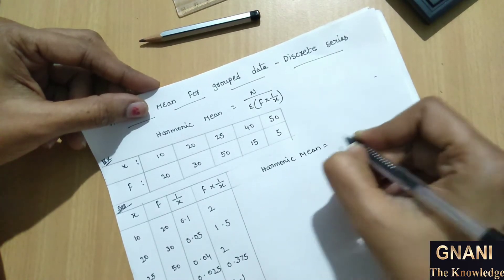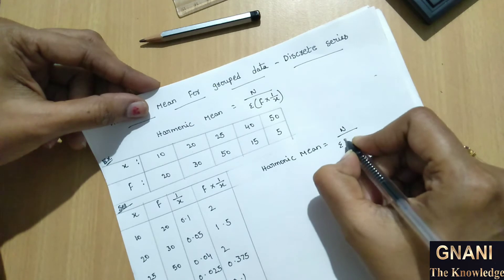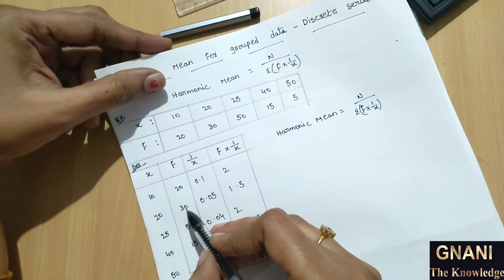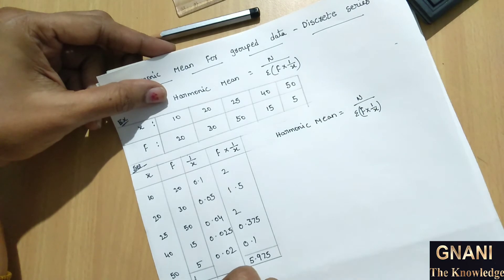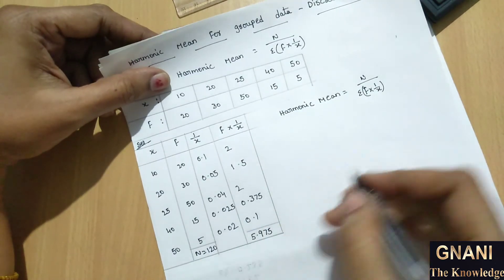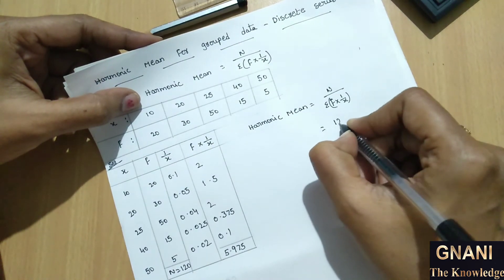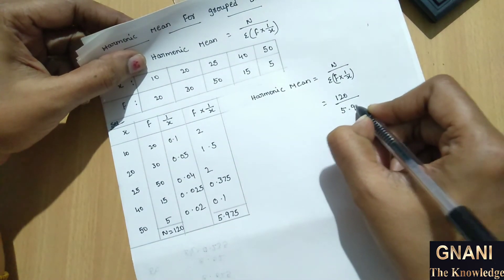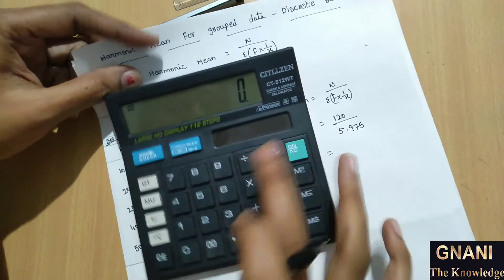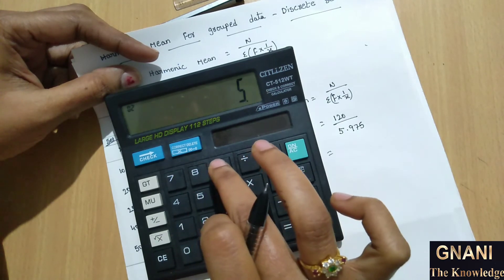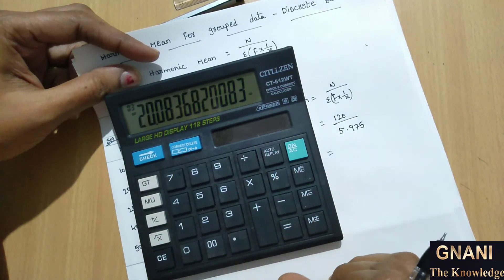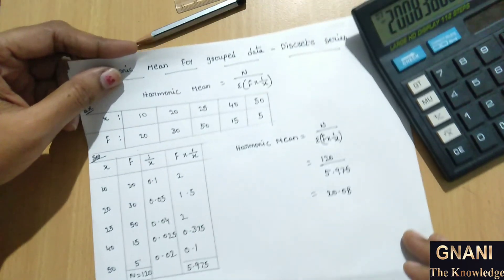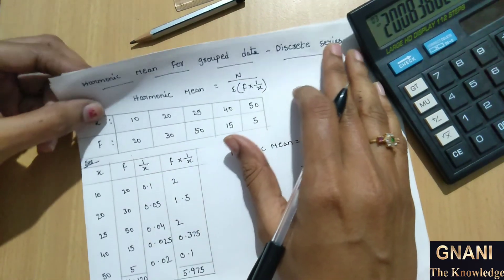Harmonic mean equals n by summation of f into 1 by x. The total frequency n equals 20 plus 30 plus 50 plus 15 plus 5, which equals 120. So harmonic mean equals 120 divided by 5.975, approximately equal to 20.08. This completes the calculation for harmonic mean for discrete data. Thank you.